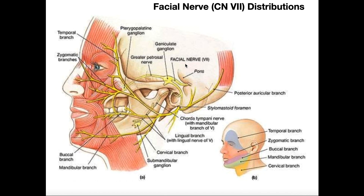Here we can see inside the skull — over here is the brainstem, and this structure is the pons. The facial nerve actually originates from the pons. If we think about the brainstem, the midbrain has the origins of cranial nerves 3 and 4, and the pons covers cranial nerves 5 through 8, so the facial nerve certainly falls in that range.